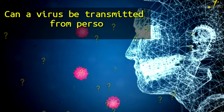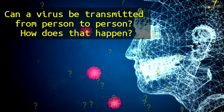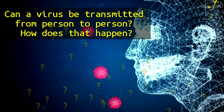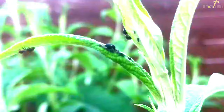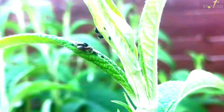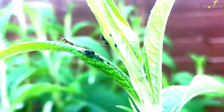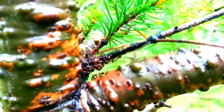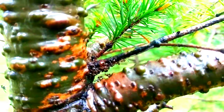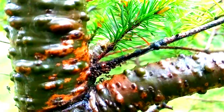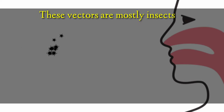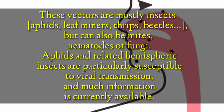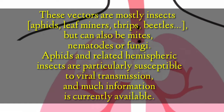Can a virus be transmitted from person to person? How does that happen? Viruses spread in different ways. One mode of transmission is through organisms that cause disease, called vectors. For example, insects that feed on plant sap, such as aphids, often transmit the virus from plant to plant. Animal viruses can also be carried by blood-sucking insects.